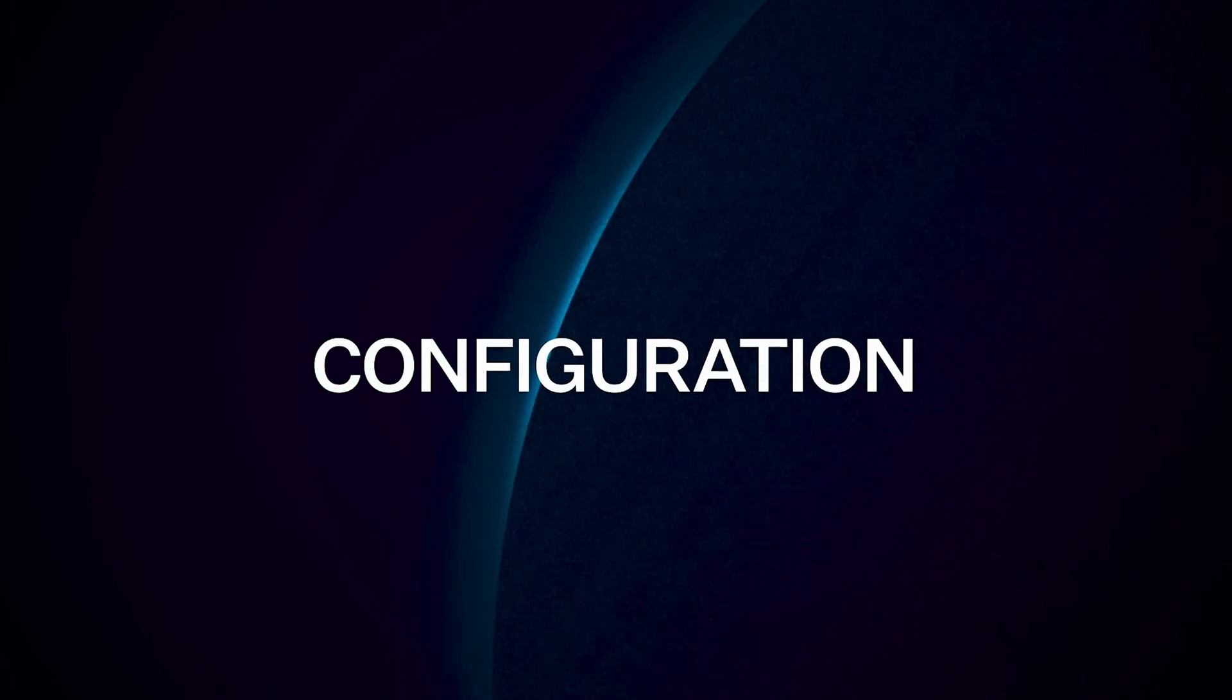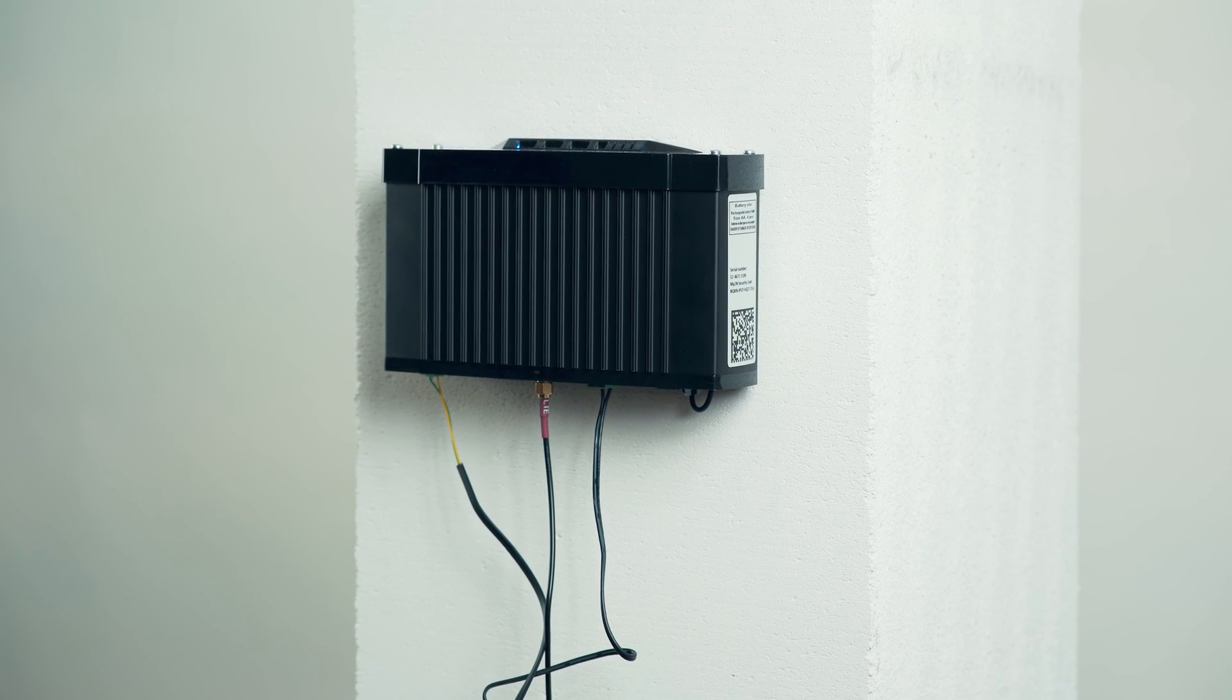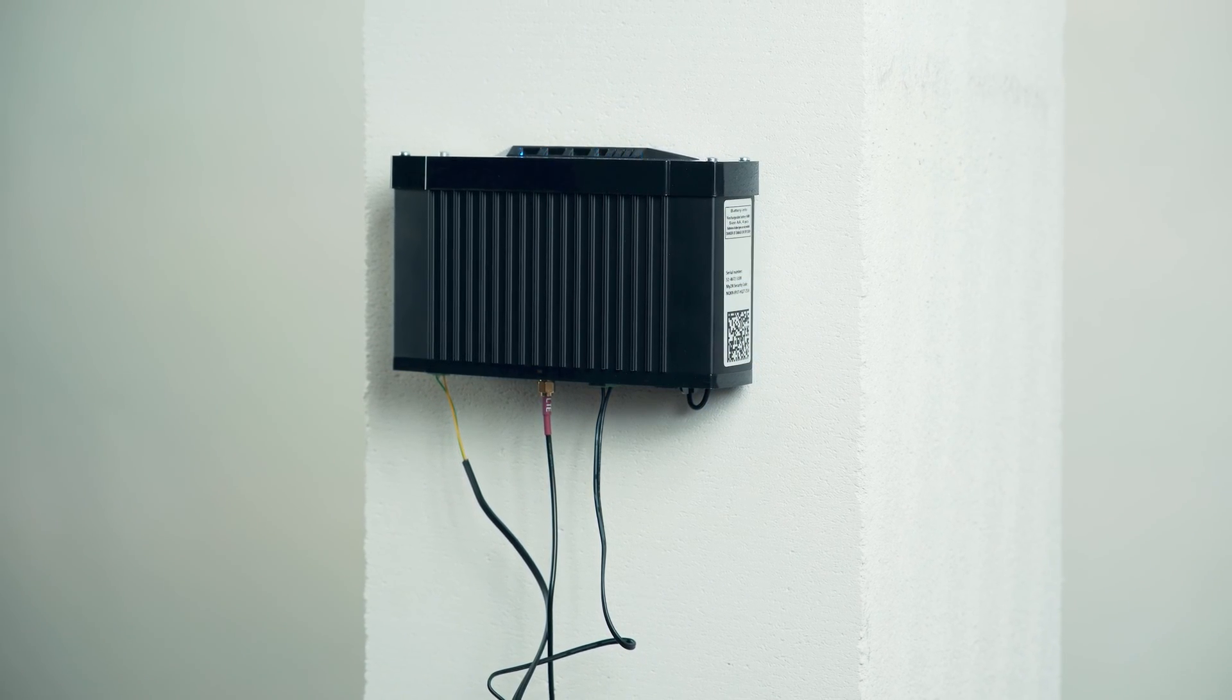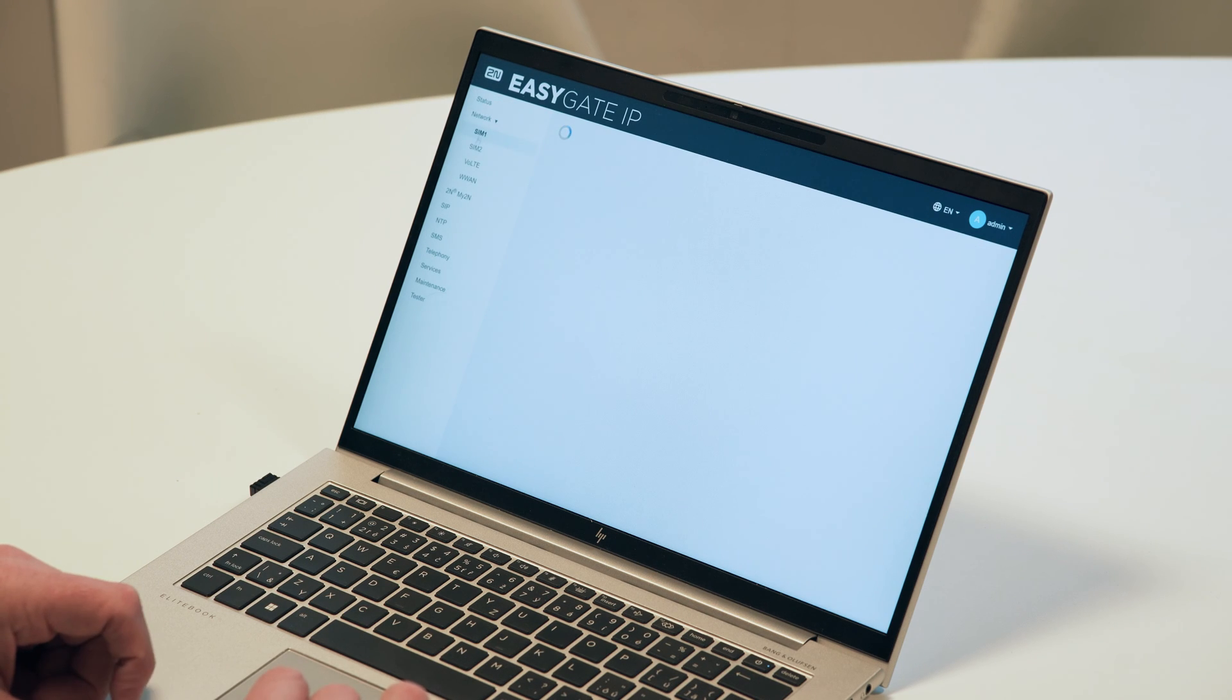Now, let's configure devices. We'll start with the 2N EasyGate IP. As it's a plug-and-play solution, there's not actually much to configure. However,